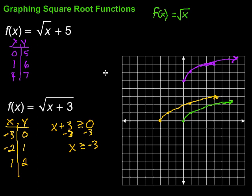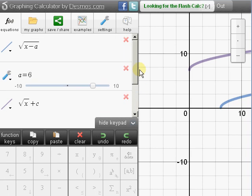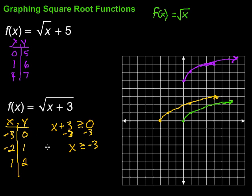We can also graph more complex square root functions following the same methods. Look at the domain, see what you can put in, then go ahead, choose some things to put in, and plot your points, and off we go. Or of course you can always use technology to check or do it in the first place, depending on what class and whatnot that you're working on. So be aware of that. Hopefully this video was helpful in terms of graphing square root functions. Keep working hard on your math. You can do it.